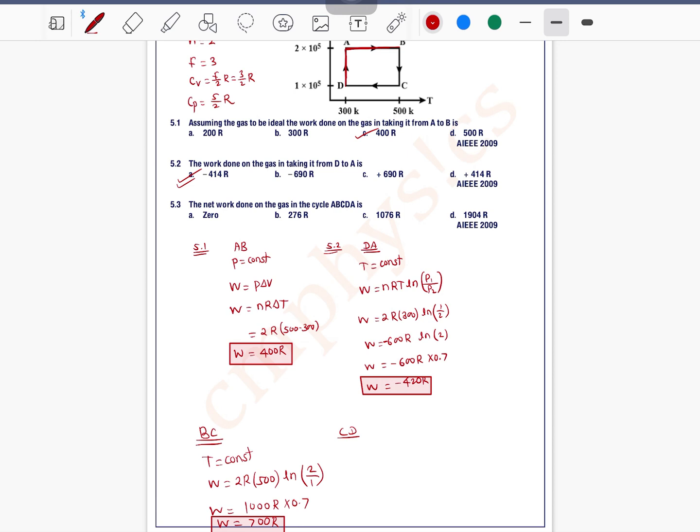And in process CD—see, in process CD, pressure is constant. Pressure is constant means we can write again W equals nRΔT. So n is 2, R is R, ΔT is 300-500=-200. So this equals -400R. Work is equal to -400R.